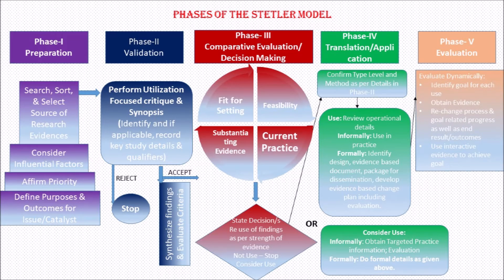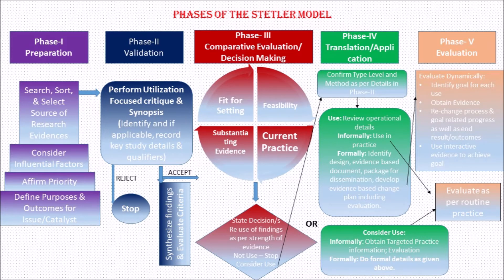This model says that you can practice the changes you want to bring into the procedure informally or formally. For informal practice, you need to identify the problems, design the procedure, prepare the evidence-based documents, disseminate the results, and develop an evidence-based changes plan including evaluation. One key point: whatever you practice informally does not develop proof for practice for others and may be limited to you. Formal practice, however, helps the entire community as it develops documents and procedure methods.